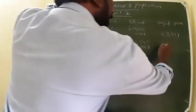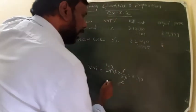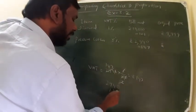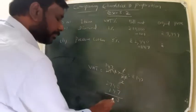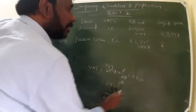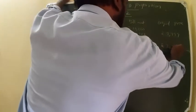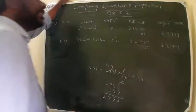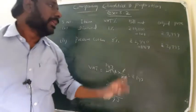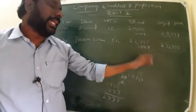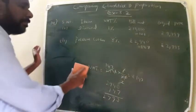So VAT is 147. If you subtract here, you will get 2940 minus 147, which is 2793. So original price is Rs. 2793. With VAT tax you will get Rs. 2940.